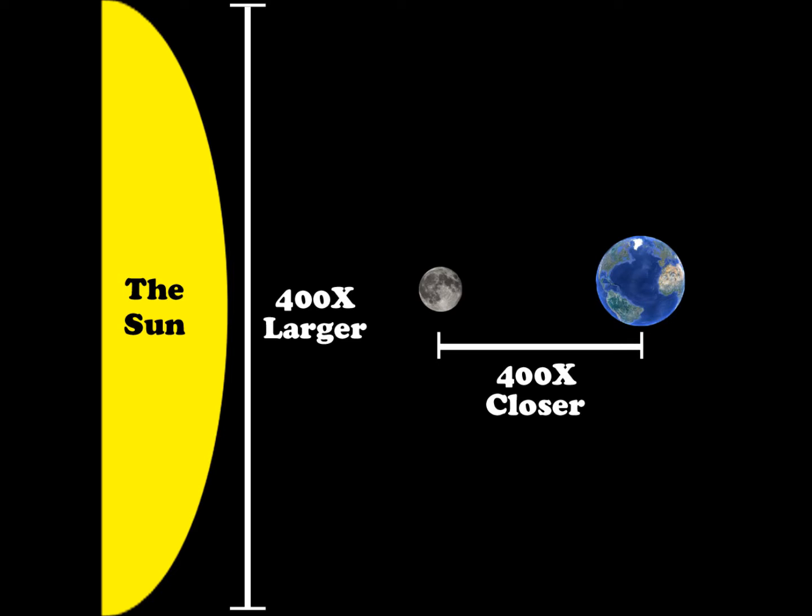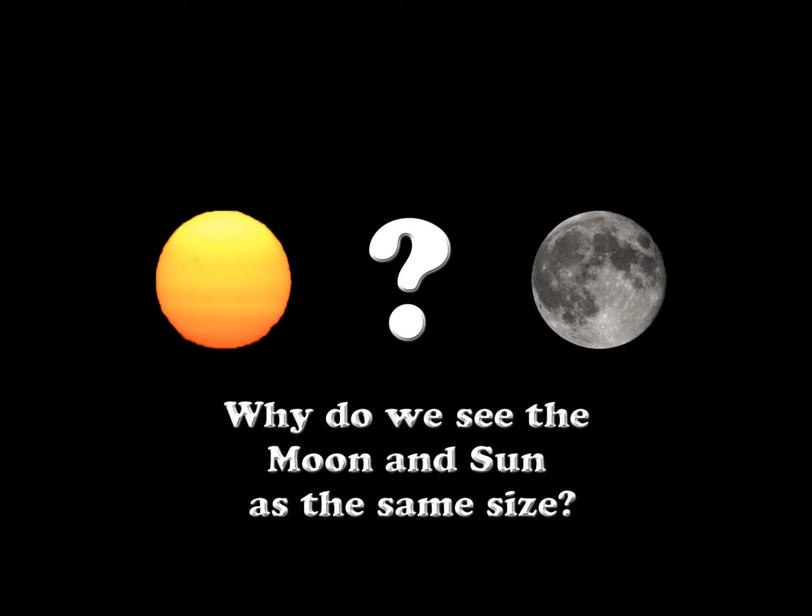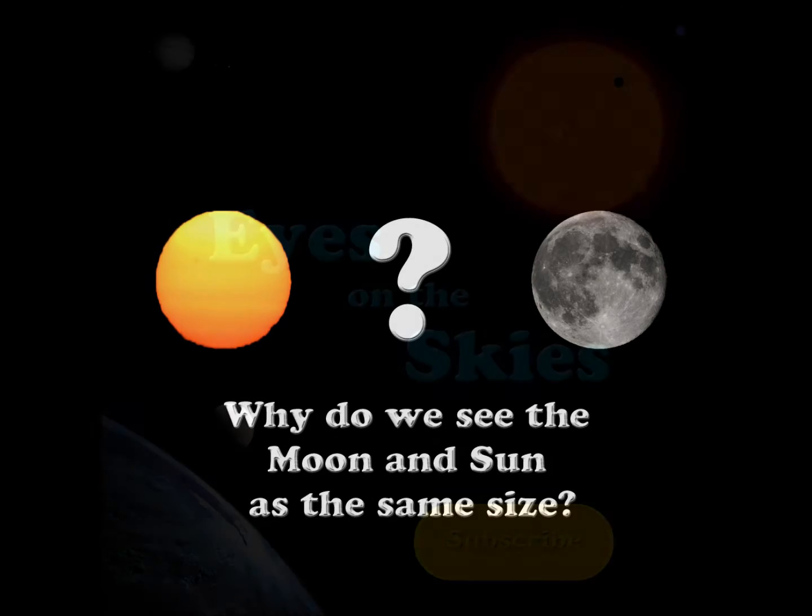Therefore, from our point of view on Earth, we see the Moon and the Sun as the same size, which is approximately the same size as our thumbnail at arm's length. So that answers our question on why we see the Moon and the Sun as the same size.